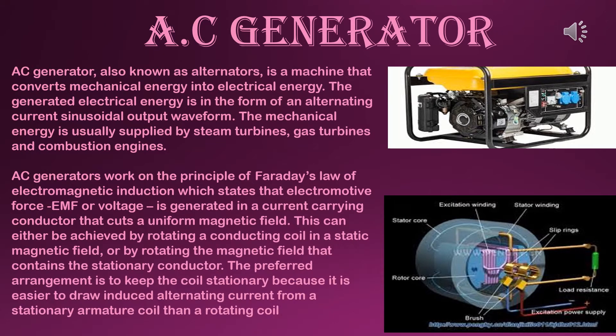AC generator, also known as alternator, is a machine that converts mechanical energy into electrical energy. The generated electrical energy is in the form of an alternating current sinusoidal output waveform. The mechanical energy is usually supplied by steam turbines, gas turbines, and combustion engines. So an AC generator converts mechanical energy into electrical energy in the form of AC.